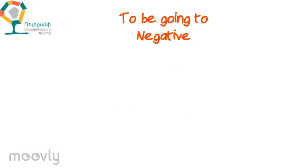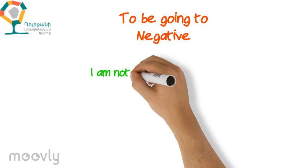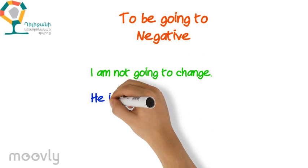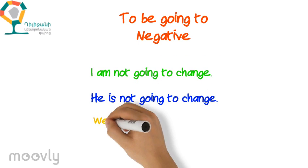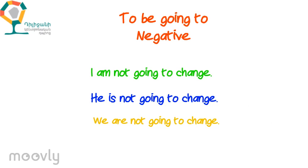And at last, the negative. We put 'not' after 'to be' — that is, after 'am', 'is', and 'are'. For example: I am not going to change. He is not going to change. We are not going to change. Etc.